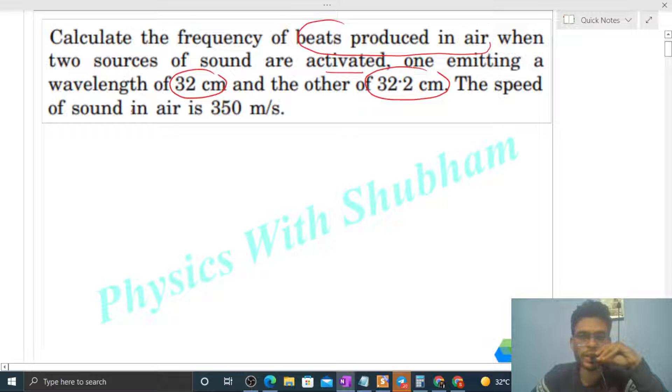The speed of sound in air is 350 meter per second. So we have two sound sources - let's say sound source one and sound source two with their wavelengths.